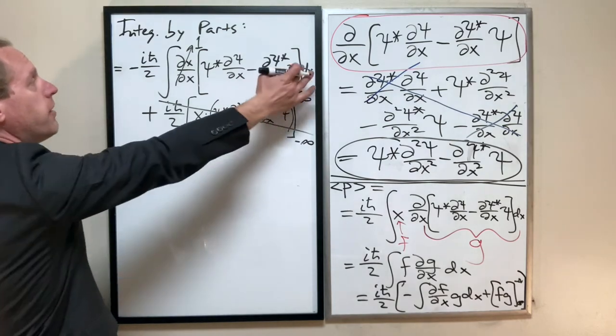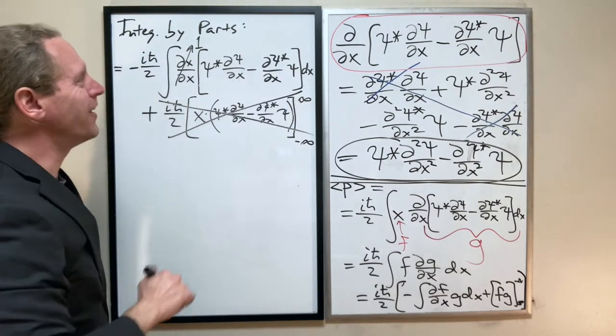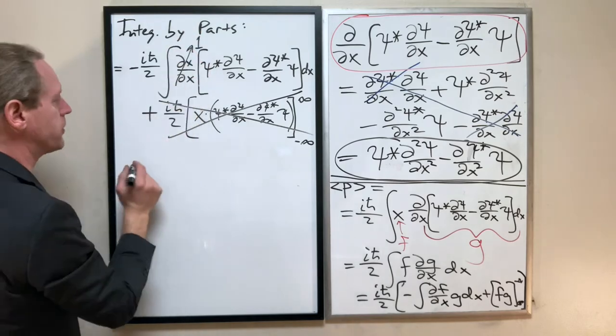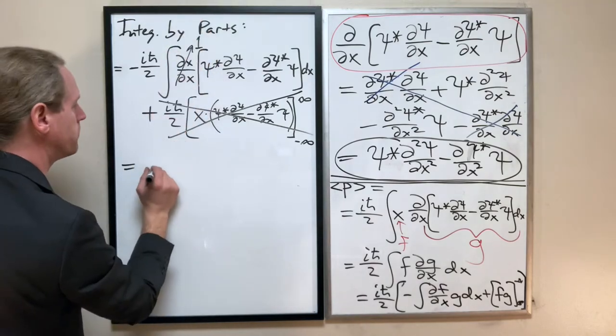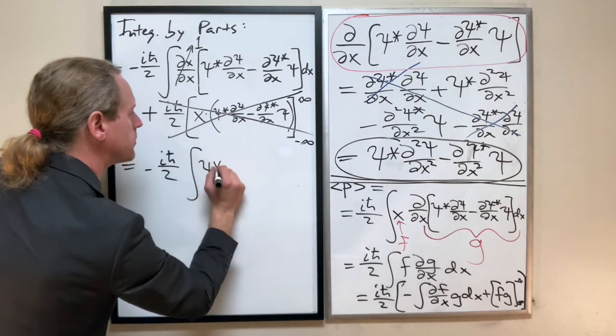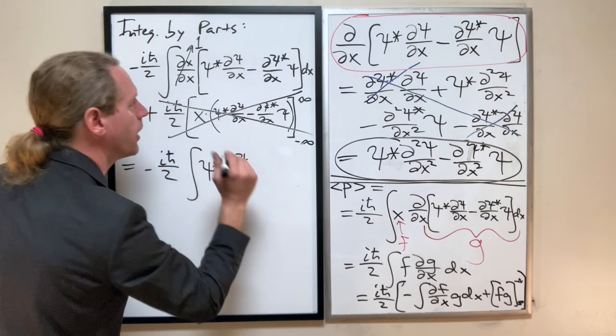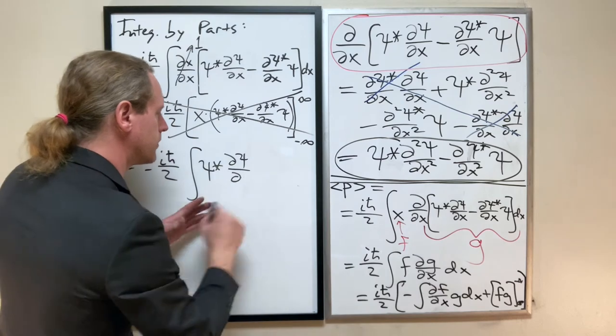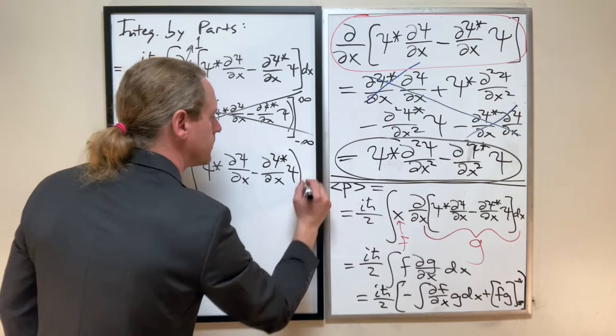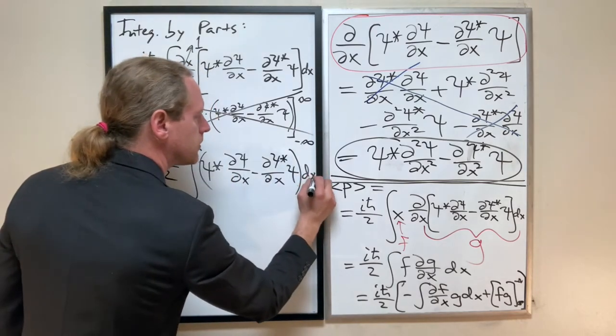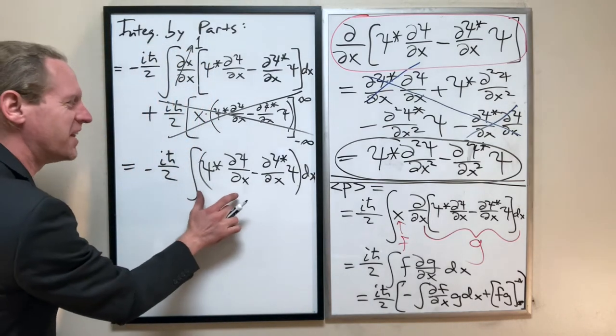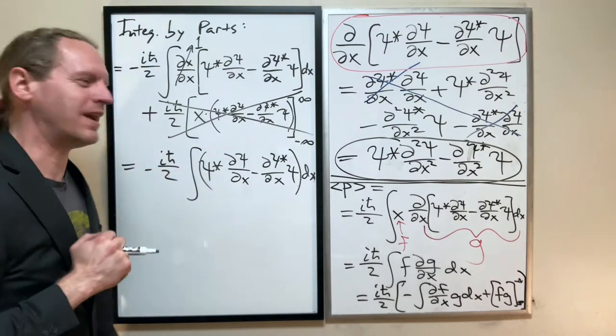So, in the end, we have this thing. Now, we're not entirely there yet, but we're very close. So, let me rewrite that, what this alternately becomes. We have minus iℏ/2, and our integral becomes ψ* dψ/dx minus dψ*/dx times ψ dx. So, at this point here, this looks also quite suggestive.